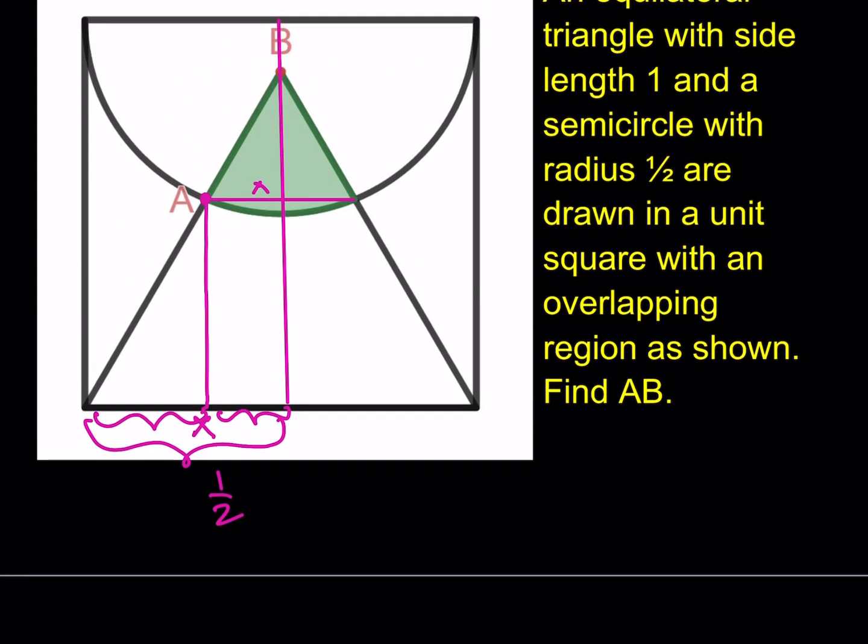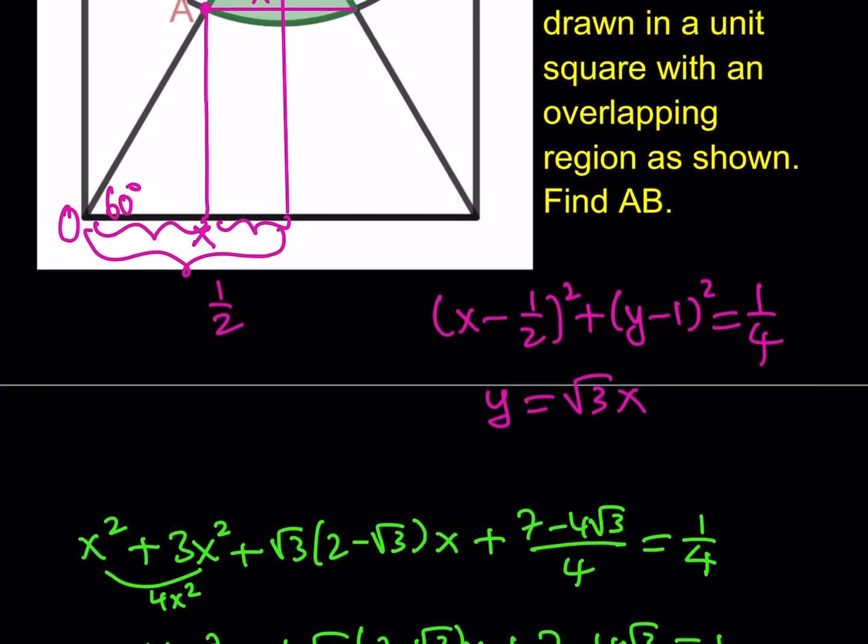So, I do need the equation of the circle. Well, this circle has the center at 1/2 comma 1, and its radius is 1/2. So, we can basically write the equation of the circle as x minus 1/2 squared plus y minus 1 squared is equal to 1/4. So, that's the equation of our semicircle. What about this line here? Well, that line makes a 60-degree angle, so its slope, and if you take this point as the origin, 0, 0, which is what we did for the circle, you can write the equation of the line as y equals square root of 3x, because it's mx plus b, but b is 0, because the line goes through the origin. So, if you simultaneously solve these two equations, you're going to get the exact same value for x.